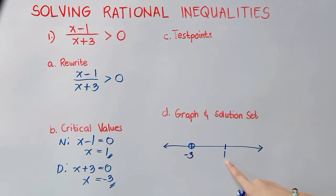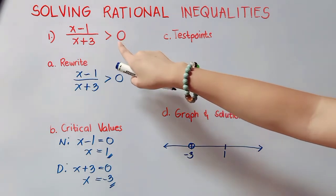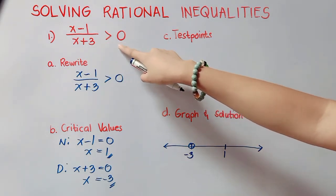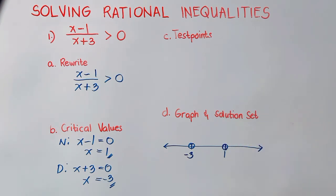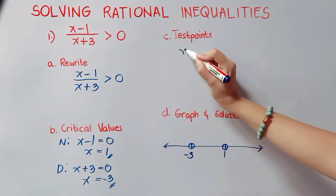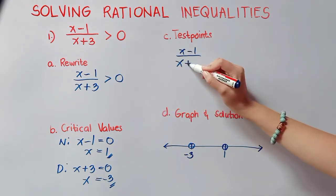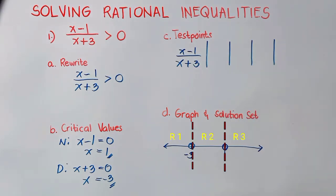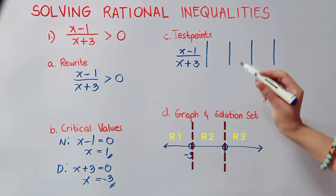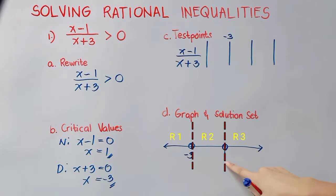The next value is 1. It will make our numerator 0, and 0 divided by any number results to 0. Therefore, 1 is also not a solution because the answer should be greater than 0, so we will still use a hollow point. We have formed here 3 regions where the critical values are negative 3 and positive 1.